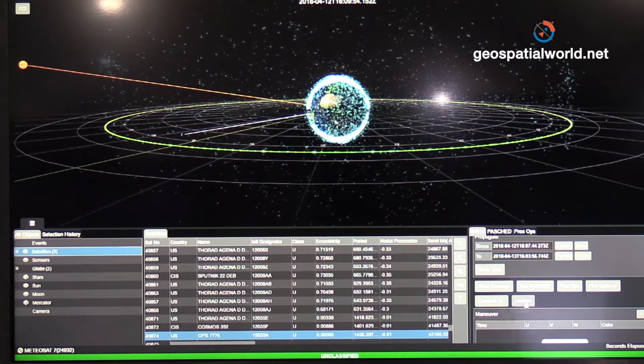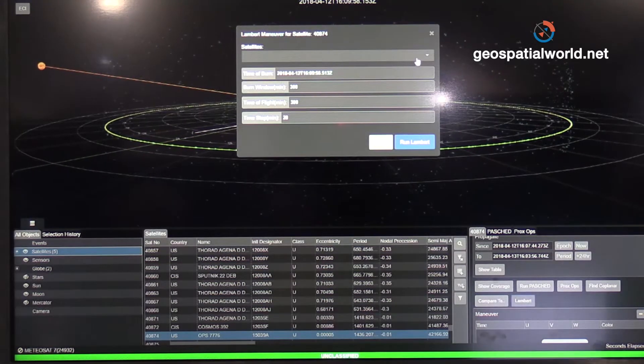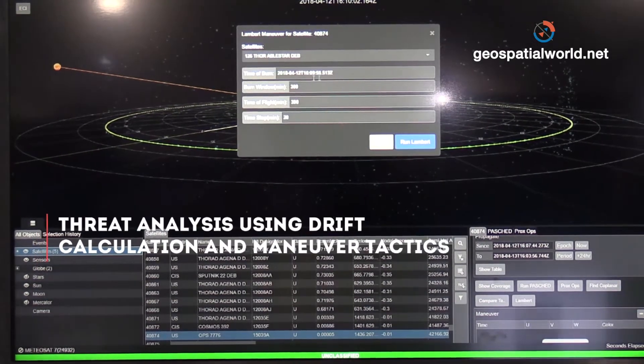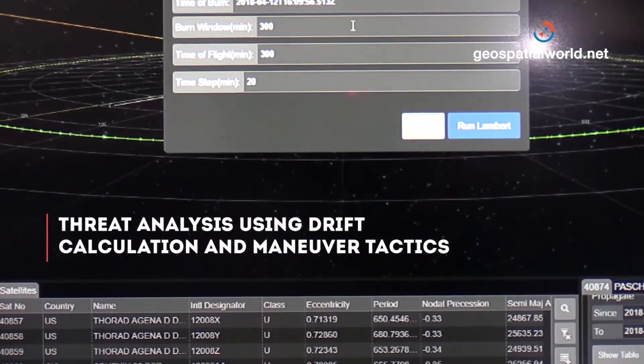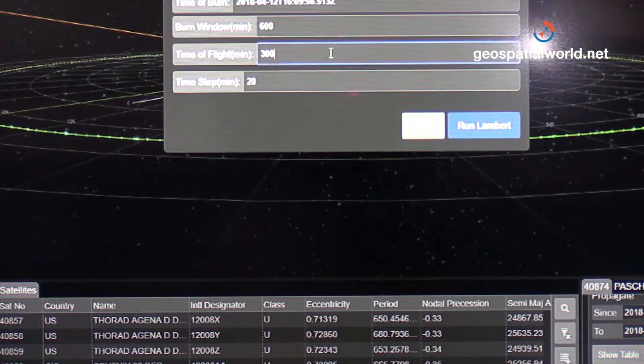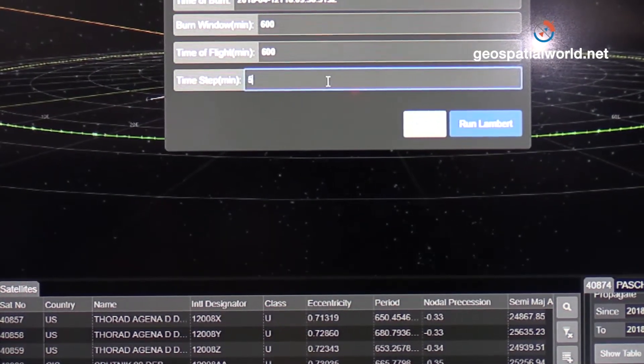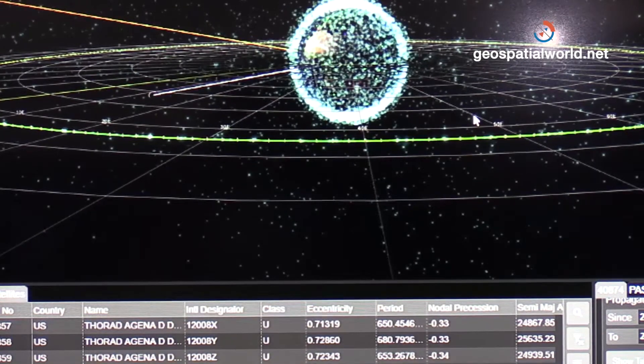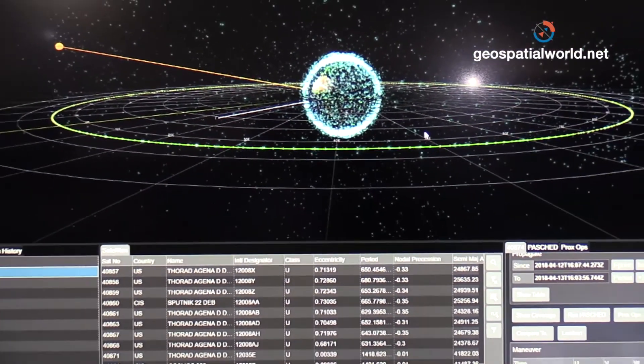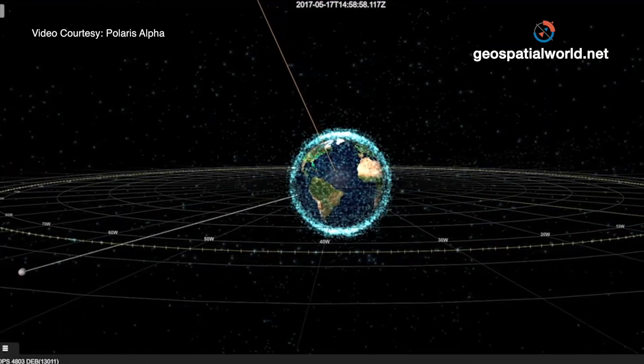We can also run a maneuver analysis. I'm going to do a Lambert maneuver. I'll select a random satellite. My time of burn window is going to be 600 minutes, time of flight is 600 minutes, and we'll step every five minutes. This Lambert maneuver is going to be two burns: the first is the intercept burn, the next is the proximity rendezvous burn. There are a few other options we can do.